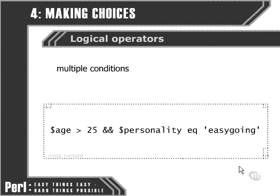Here is an example of a logical operator at work — this is the AND operator. In this case, we're putting an ad in the paper to find a housemate, and we're able to specify two different attributes we require the person to have. We need them to be both over 25 and an easy-going kind of person to get along with. We're able to mix string comparison and numeric comparison operators within the one multiple condition.